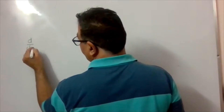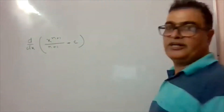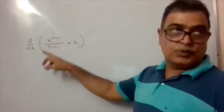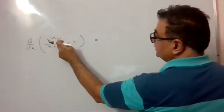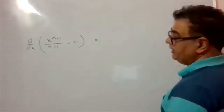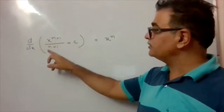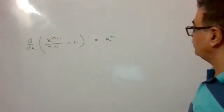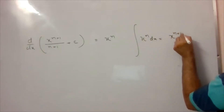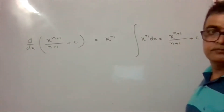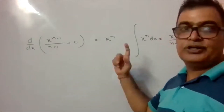First result: d/dx of [x^(n+1)/(n+1) + C]. Taking the derivative: (n+1)·x^n divided by (n+1), the (n+1) cancels, giving simply x^n. So the first result is: integration of x^n dx = x^(n+1)/(n+1) + C.